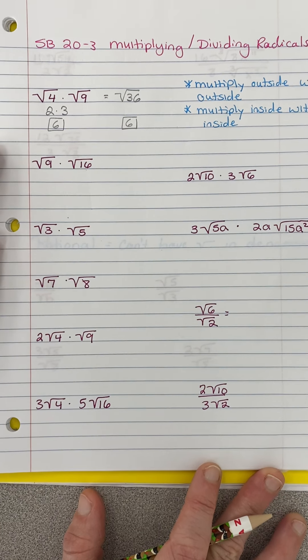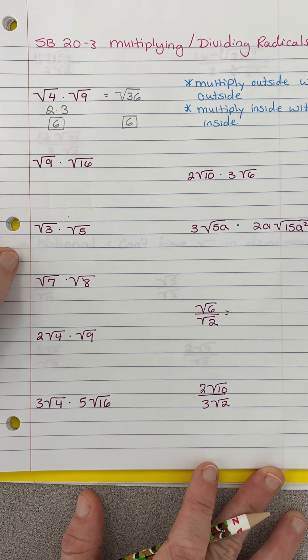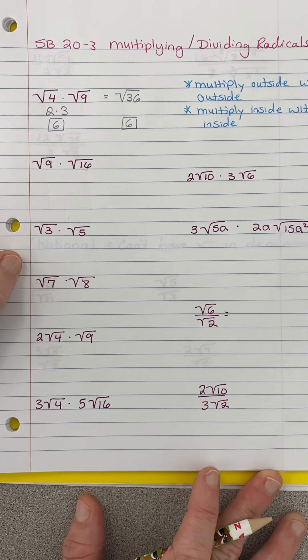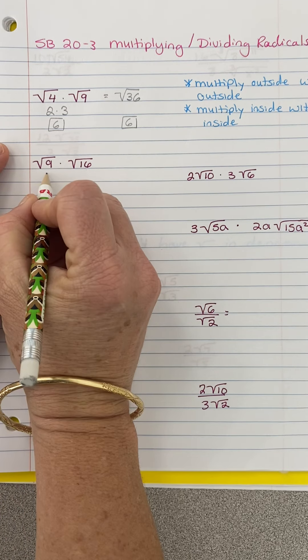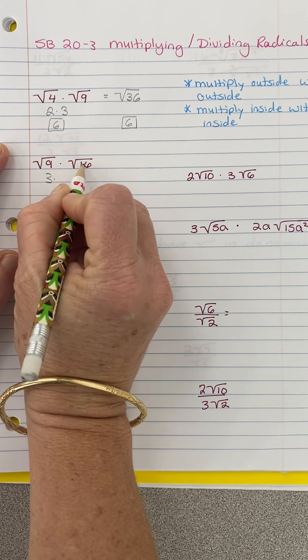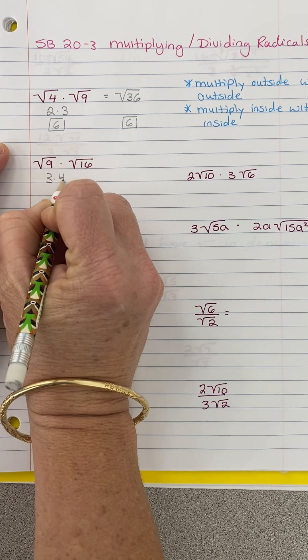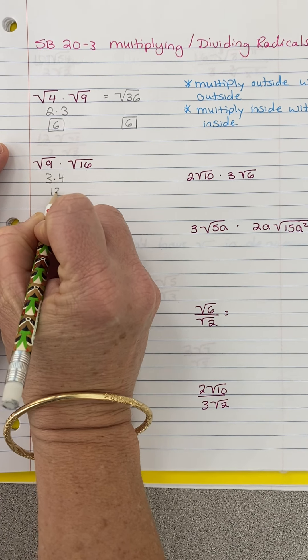This next problem is another example of perfect squares. The square root of 9 is 3. The square root of 16 is 4. The answer is 12.